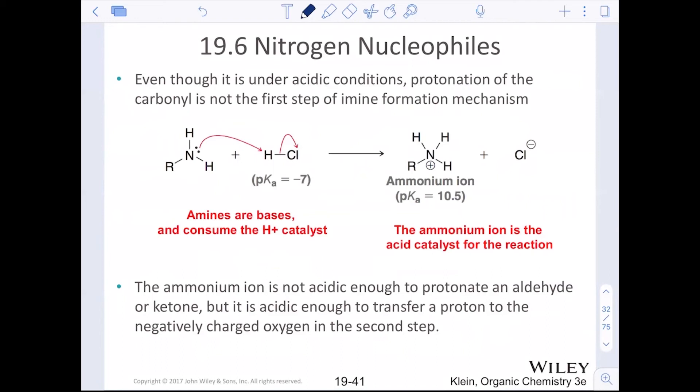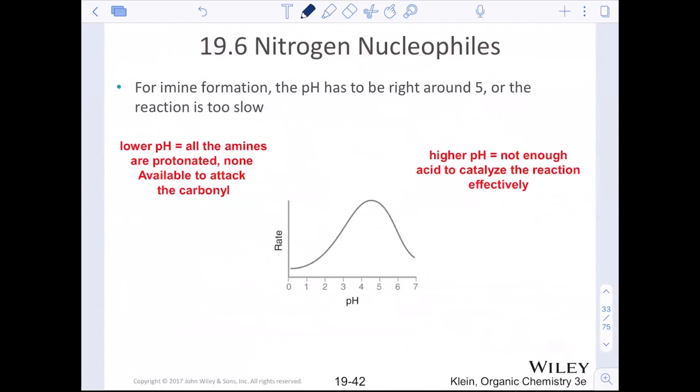Even though it's under acidic conditions, protonation of the carbonyl is not the first step. And primarily it's because the ammonium ion is not acidic enough to protonate the aldehyde or the ketone, but it is acidic enough to do a transfer of a proton to a negatively charged oxygen in the second step. So we will have mild acid conditions. You drop a little HCl in there. And what you actually have is your acid is an ammonium ion with the pKa of 10.5. Aldehydes and ketones have a pKa somewhere around nine to 10. So we're not going to do the protonation of the aldehyde or ketone oxygen. It's not acidic enough. Again, pH has to be right around five or the reaction is too slow. Lower pH and all the amines are protonated. So none of them are able to actually be a nucleophile at a higher pH. There's not enough acid to catalyze the reaction. And so we have to be right around the sweet spot here, which is mild acid in our terminology, which means that somewhere in between an acid and a base catalyzed reaction.